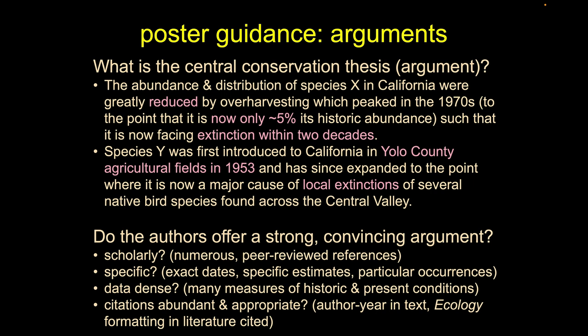So maybe one of the posters I'm working on, one of the species I'm trying to characterize — maybe that thesis is that the abundance and distribution of species X in California were greatly reduced by overharvesting, which peaked in the 1970s, to the point that it is now only about 5% of its historic abundance, such that it's now facing extinction within two decades.